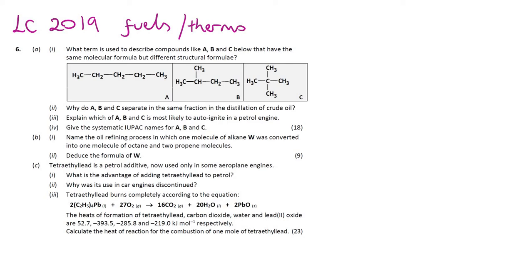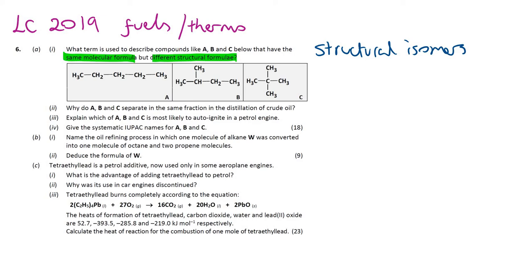The first part is basically asking for a definition — but this time you don't have to give the definition, you're asked just to give the term. So molecules that have the same molecular formula but a different structural formula are known as structural isomers. If a molecule has the same molecular formula, it has the same number and type of atoms. If the structural formula is different, those atoms are arranged differently — the bonds are different — as you can see with A, B and C.